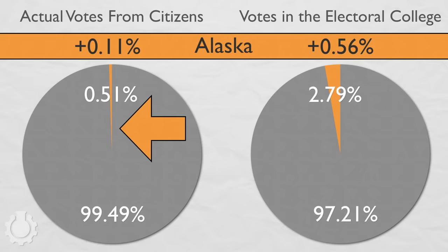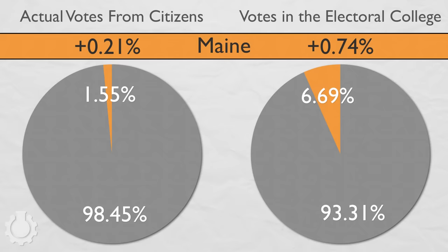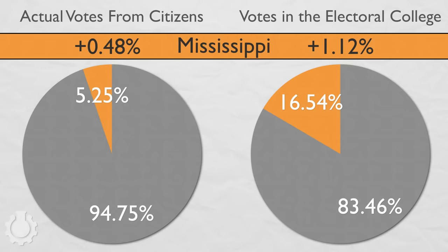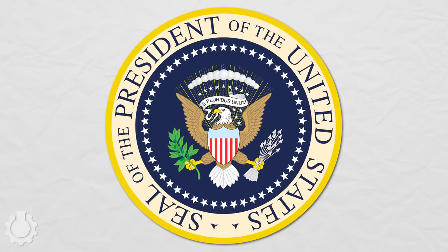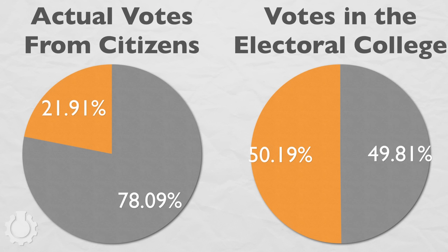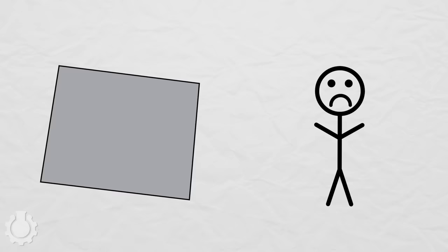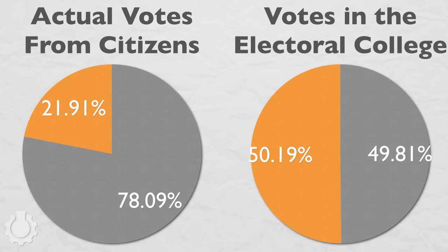Next: South Dakota, Delaware, Montana, Rhode Island, New Hampshire, Maine, Hawaii, Idaho, Nebraska, West Virginia, New Mexico, Nevada, Utah, Kansas, Arkansas, Mississippi, Iowa, Connecticut, Oklahoma, Oregon, Kentucky, Louisiana, South Carolina, Alabama, Colorado, Minnesota, Wisconsin, Maryland, Missouri, Tennessee, Arizona, Indiana, Massachusetts, Virginia, and New Jersey. Congratulations! By taking advantage of the unfair rules and winning states, not people, you've won a majority in the Electoral College even though 78% of the population voted against you.